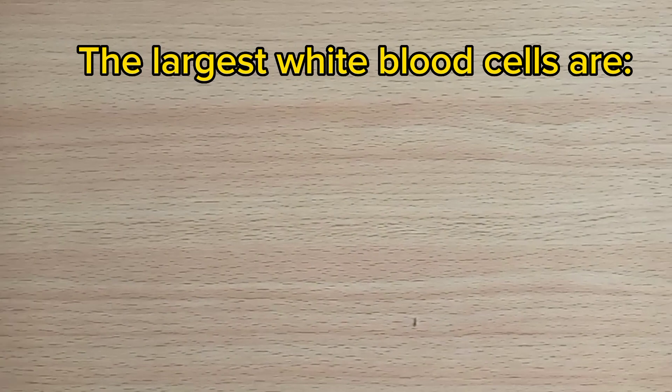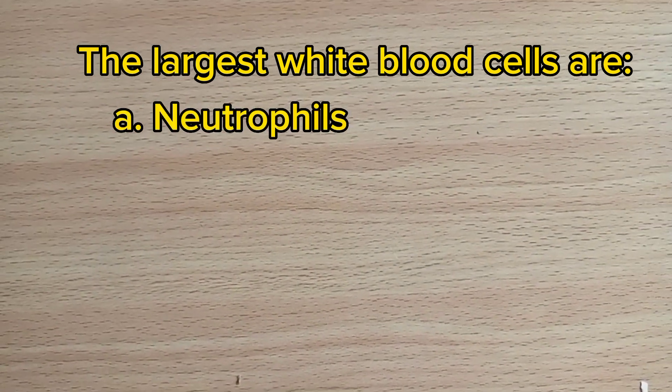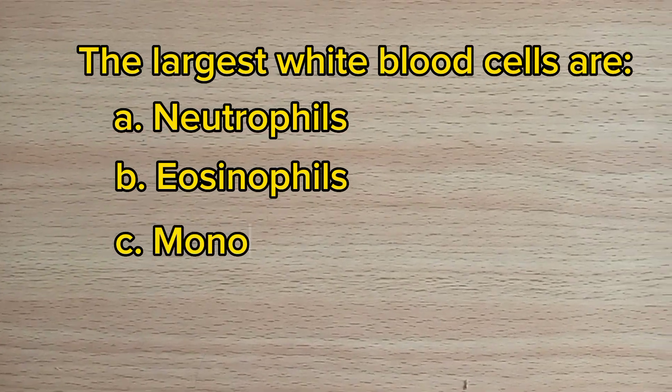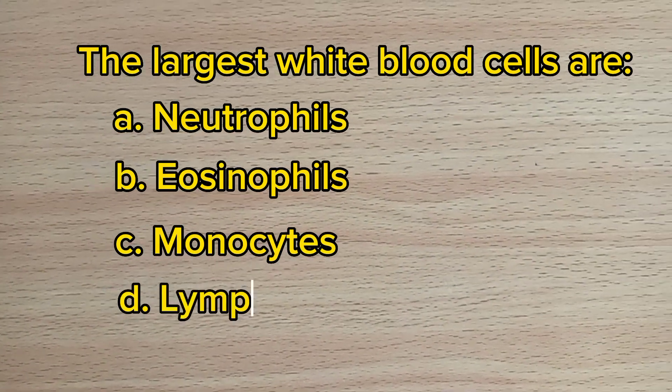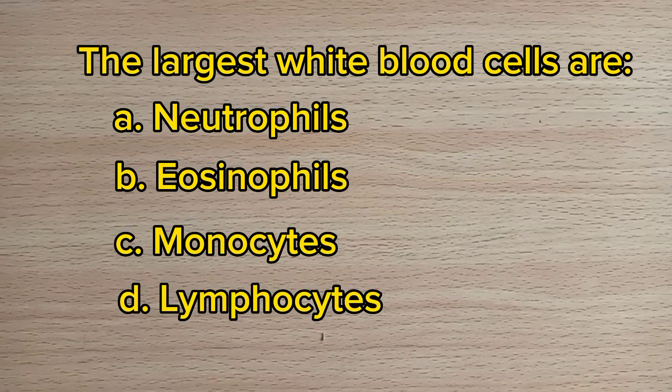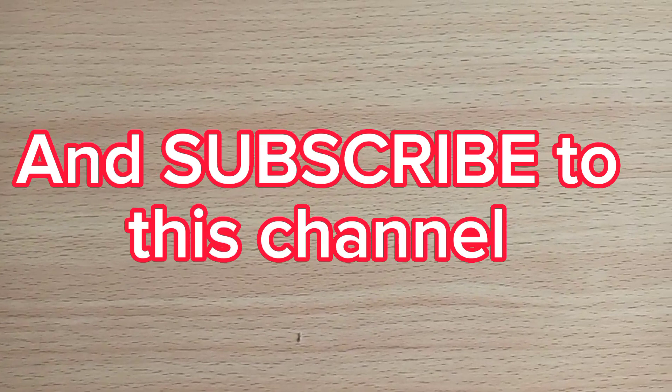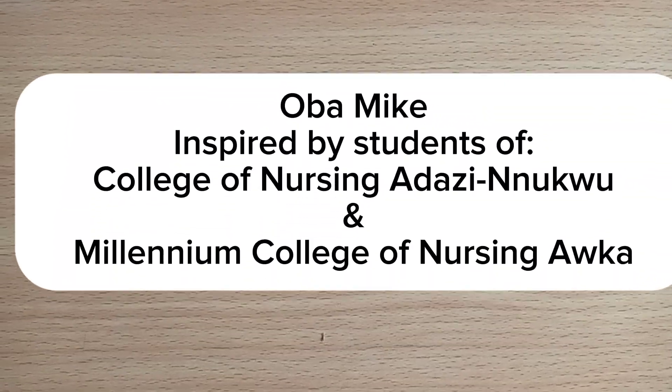Number twenty: The largest white blood cells are: A. Neutrophils, B. Eosinophils, C. Monocytes, D. Lymphocytes. The answer is C, monocytes. Thank you, please like and subscribe to this channel.